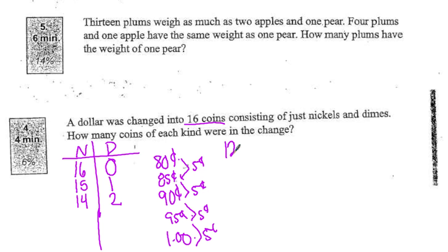So that would mean I have 12 nickels. And if I have 16 coins, that means I have to have four dimes. And again, I can check my work here. Four dimes is 40 cents. 12 nickels is 60 cents. That makes exactly a dollar. So I know my answer is correct. So that's one way to do that problem.